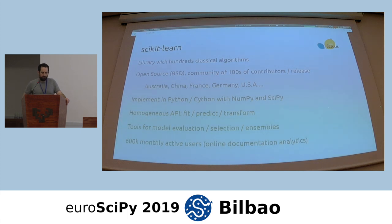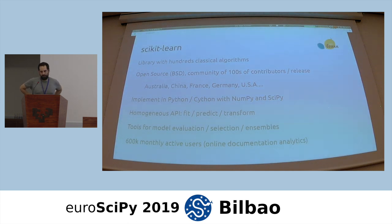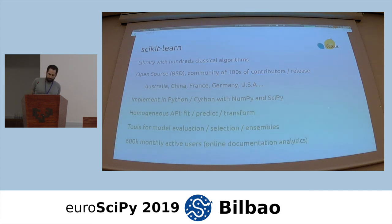Scikit-learn is a library with hundreds of machine learning algorithms. We focus on classical algorithms that are good baselines, that have been known for a while, and we know they are useful. We do not necessarily implement the latest state-of-the-art of machine learning research — we leave that to other research libraries. The goal is to provide a good baseline for data scientists. It's open source with a BSD license, so it can be used in both business and scientific applications with no constraints.